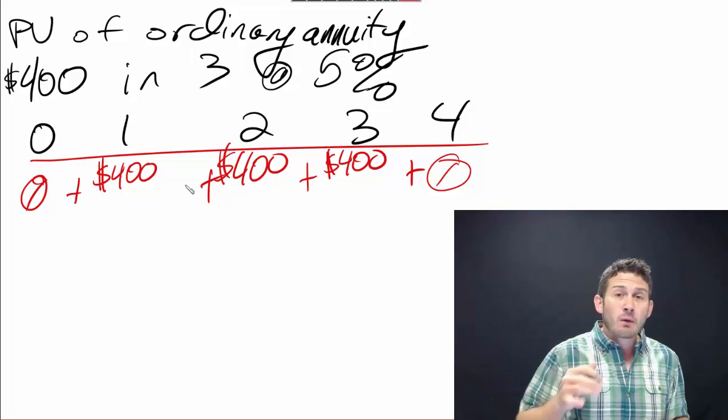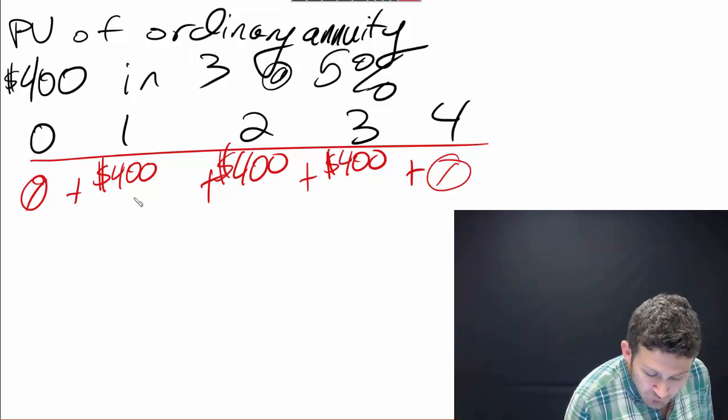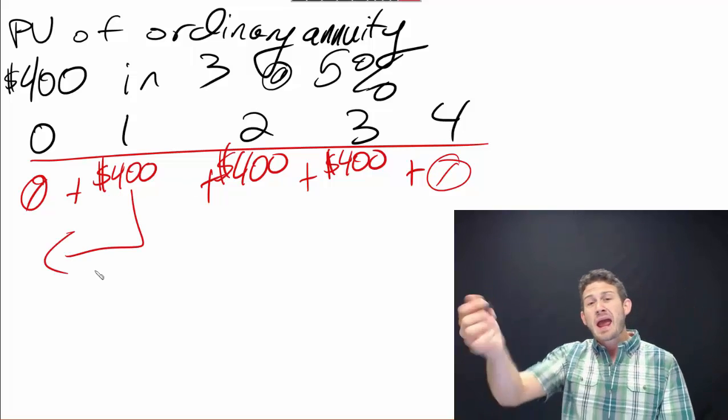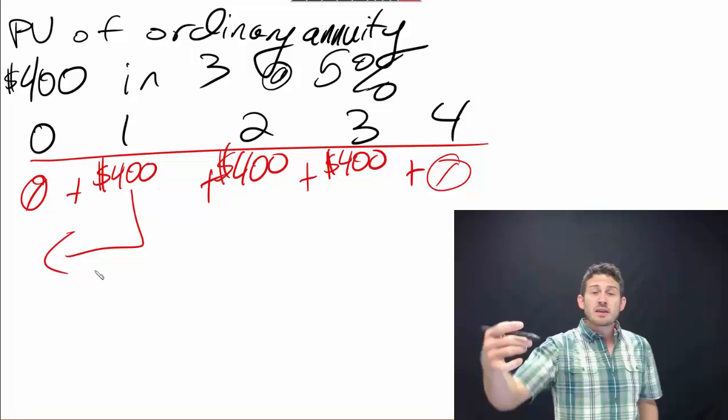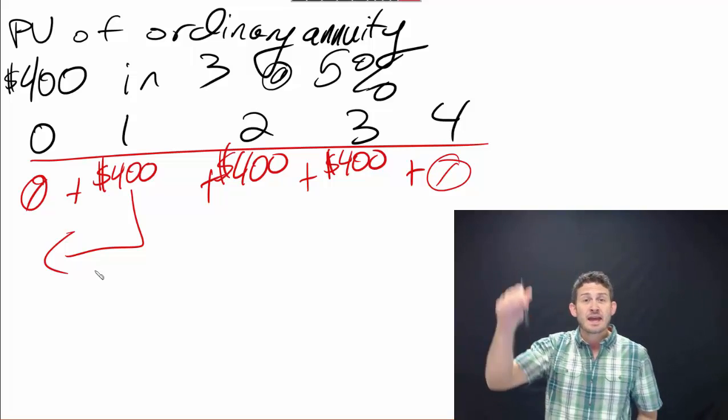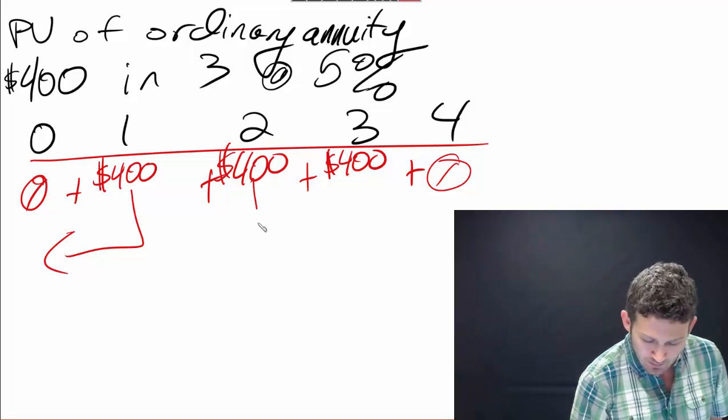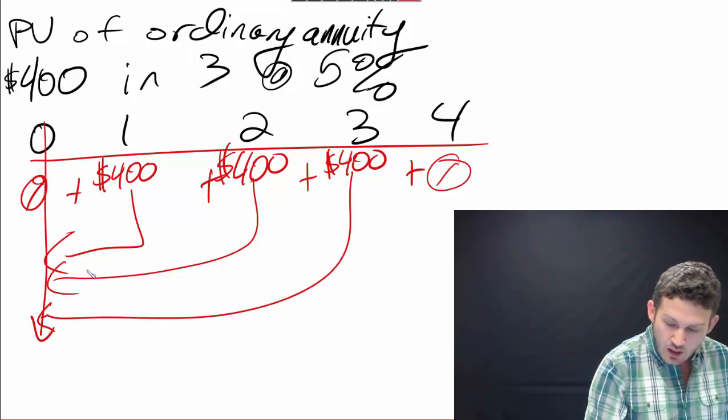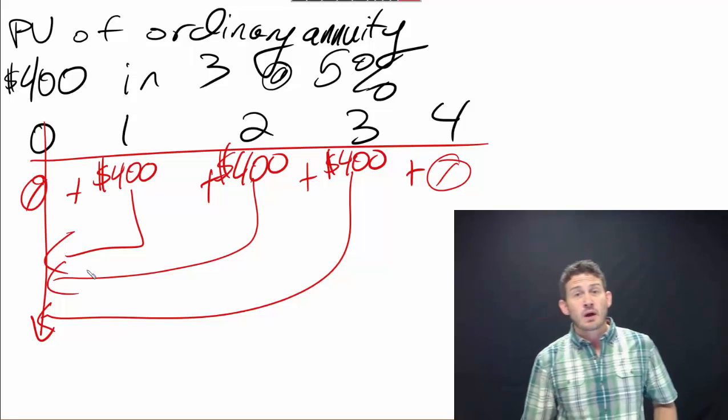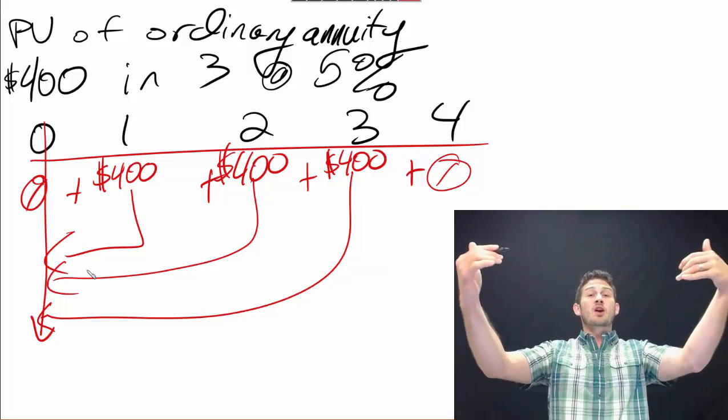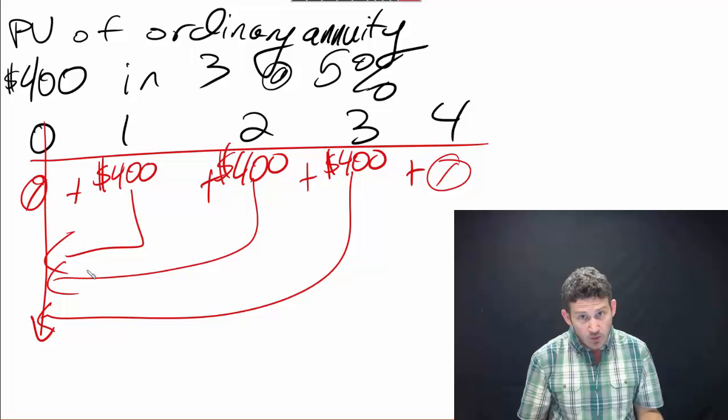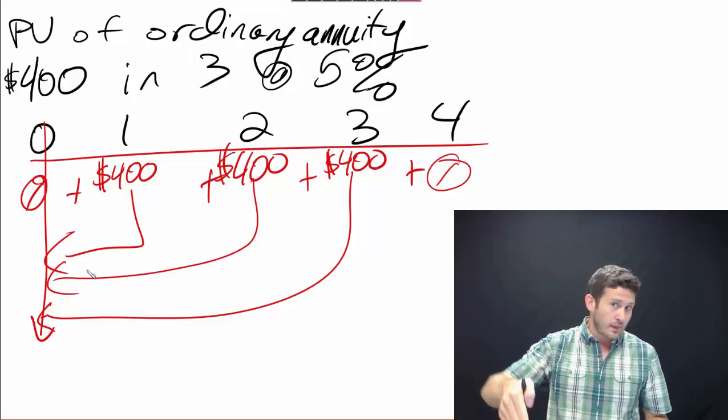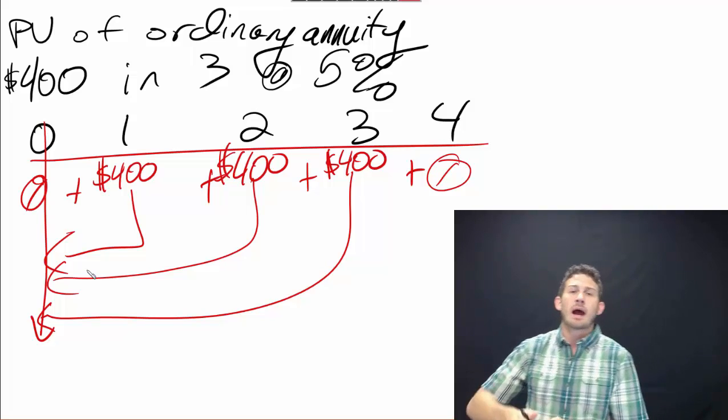Now we have all of these mapped out on our cash flow diagram. Now what do we have to do? We have to bring these back to a present value, bring these back to a valuation today, right now. So all of these are coming back to time zero. Why are we looking at this at time zero? It's because we're trying to figure out what the value is to us right now.